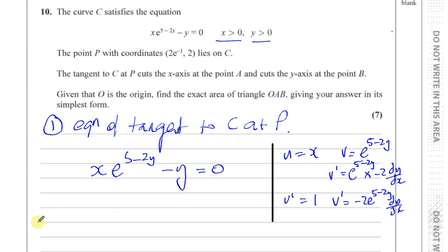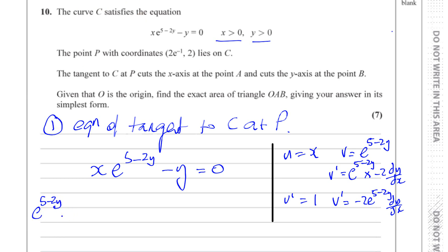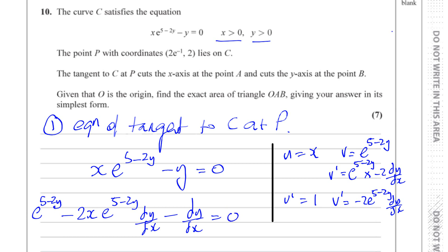When I differentiate a product I use the product rule: u·v' + v·u'. So I get e to the power of 5 minus 2y times 1, plus — because there's a minus — minus 2x times e to the power of 5 minus 2y times dy/dx. Then I also differentiate minus y with respect to x, which gives minus dy/dx. And 0 differentiated stays 0.